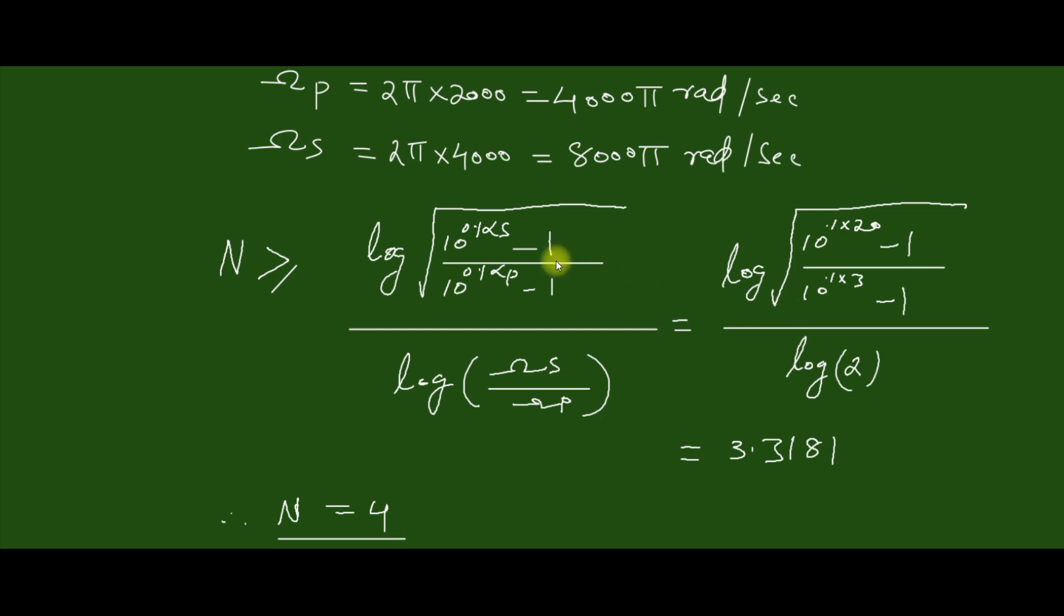Substituting for the specifications and calculating, we get the value of N as 3.3181, which when rounded to the next highest integer, we get the order of the filter N equal to 4.